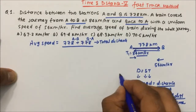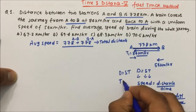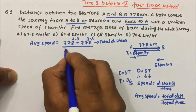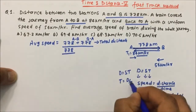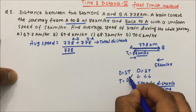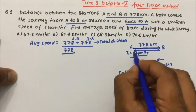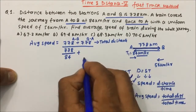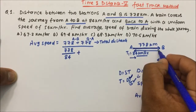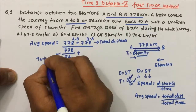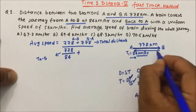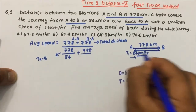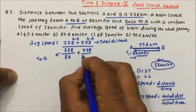Now, time equals distance divided by speed. So from A to B, time will be 778 divided by speed 84, plus time from B to A, which will be distance 778 divided by speed 56 km per hour.